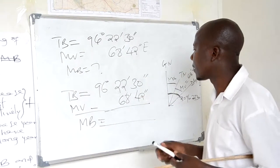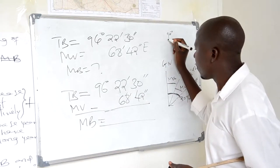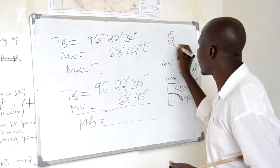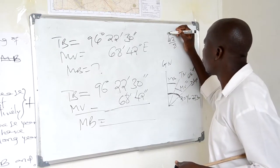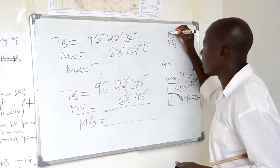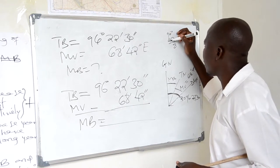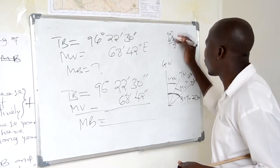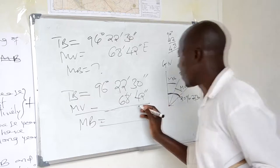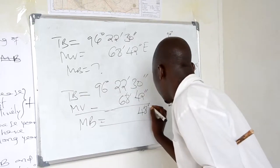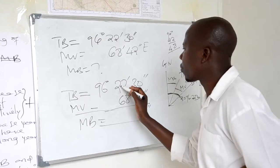Therefore, 90 minus 42: here is 80, and here we mean 4 — because it is 80 minus 4, we get 48. Here will be 48 seconds. Here remain 21.